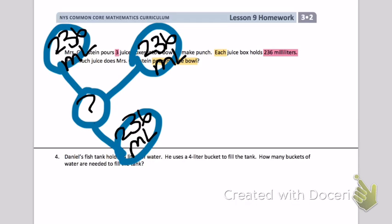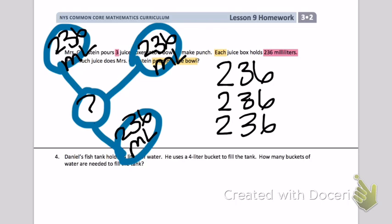I don't know what my total is. So using that idea, I am going to create a repeated addition problem: 236 plus 236 plus 236. I have three sixes. I can count by threes six times. 3, 6, 9, 12, 15, 18. That's going to give me the total.